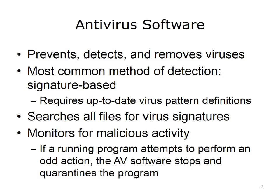AV software searches computer files for virus signatures and is able to determine if a file is infected with a virus. If the AV software finds what it sees as a virus, it quarantines the file. AV software also monitors for malicious computer activity. For example, if a running program attempts to perform an unfamiliar action, the AV software will stop and quarantine that program and its actions. For instance, if Microsoft Excel started a search or attempted to communicate over the network to a website without the user being part of that process, AV software should stop that from happening.